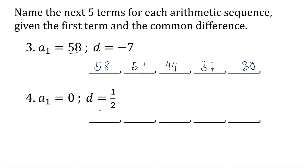For number four, the first term is zero. Zero plus the common difference one-half is one-half. One-half plus one-half is one. One plus one-half is one and one-half. One and one-half plus one-half is two. So these are the first five terms of this sequence.